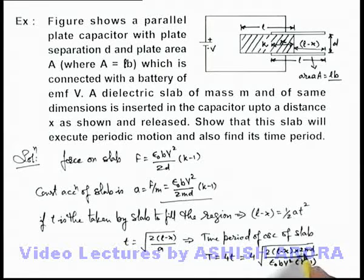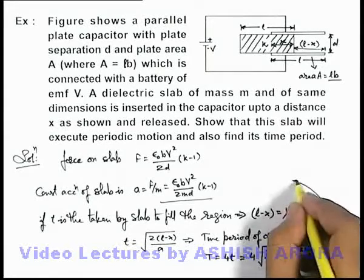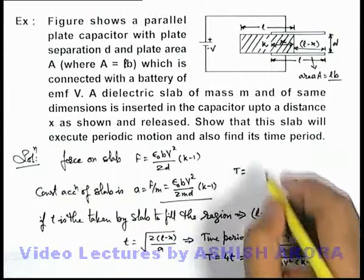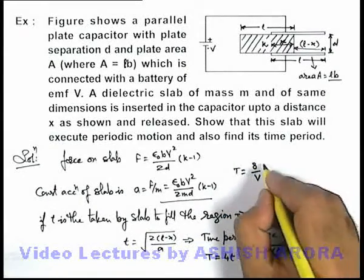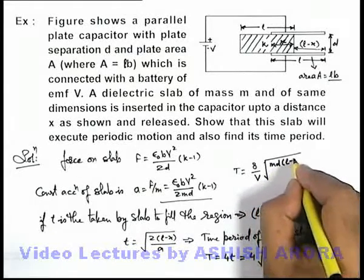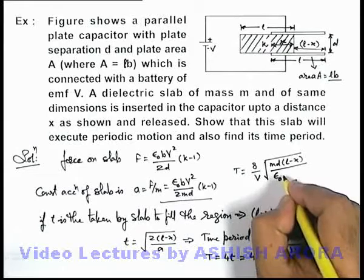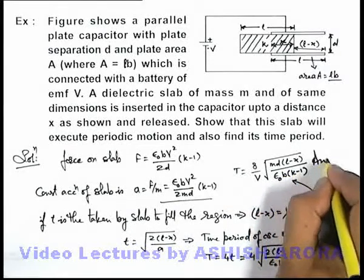Now we can further simplify: taking the 2 common out gives a factor of 8, and v can also be taken out. So the time period can be written as T equals (8/v) times the square root of md(l minus x) divided by ε₀b(k minus 1). That will be the final answer to this problem.